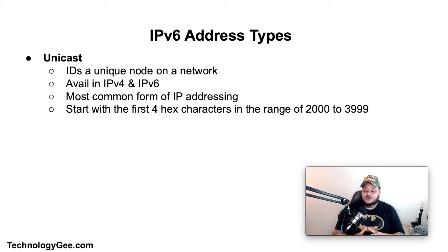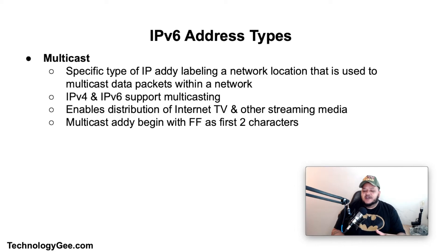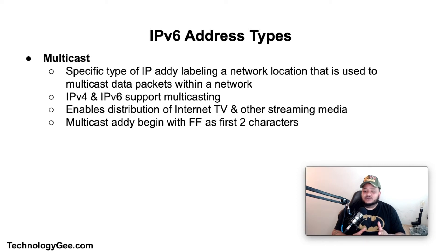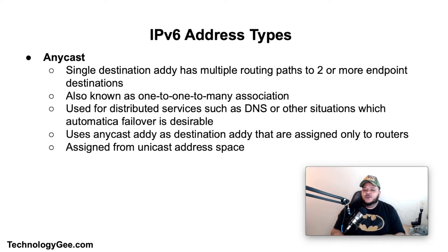Next we have multicast, which is a specific type of IP address labeling a network location used to multicast data packets within a network. It contrasts with unicast, which only allows one-to-one models. Both IPv4 and IPv6 support multicasting, and multicast enables the distribution of content such as internet TV and other types of streaming media. Multicast addresses begin with 'ff' as the first two hexadecimal characters.